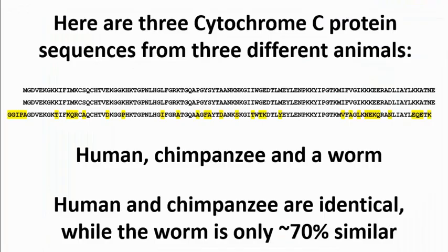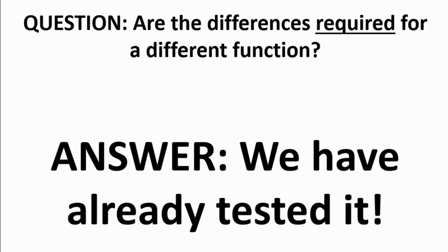Here I've got three cytochrome C protein sequences from three different animals. The top is the human sequence, the middle is the chimpanzee, and the bottom is a worm sequence. You can see that the human and chimpanzee sequences are identical, and the worm is roughly 70% identical. The question we're asking is: are the differences in those sequences required for a different function in those organisms? Is there something about being human, or something about being a worm, that requires a different sequence for that protein?